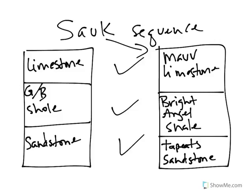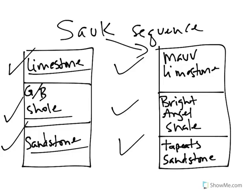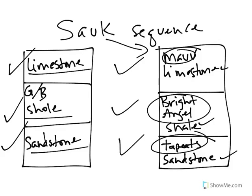We have a transgressive sequence — check, check, and check. The great thing is when we move on to our next sequence, the Tippecanoe, or the Kaskaskia, or the Absaroka, they're all going to follow this same trend: sandstone, shale, limestone. We're going to see the same rocks over and over. The only thing that's going to be different is they're going to have different names. If you understand how a transgressive sequence works, you should be able to expect certain rock types — you can predict what you should see in the field.